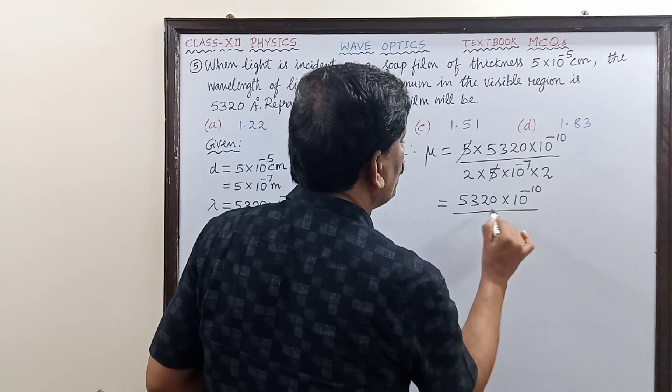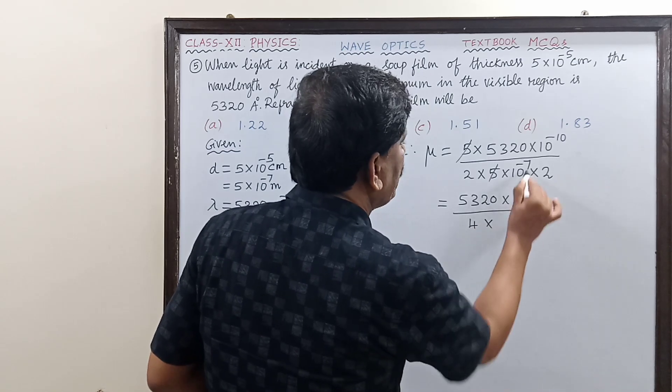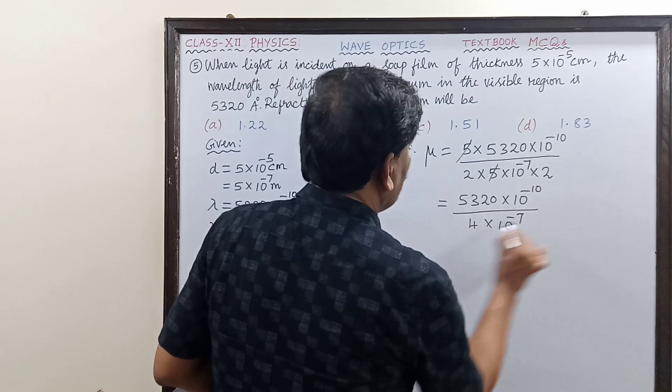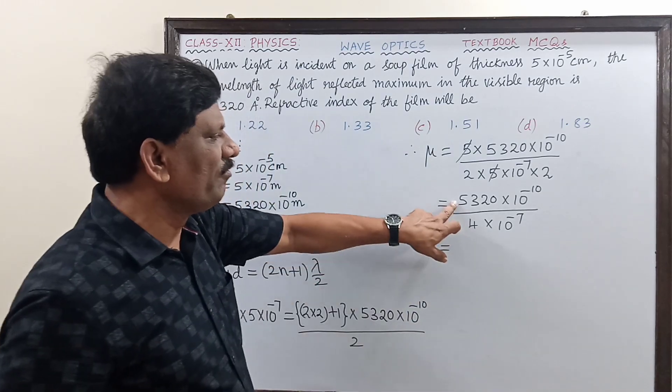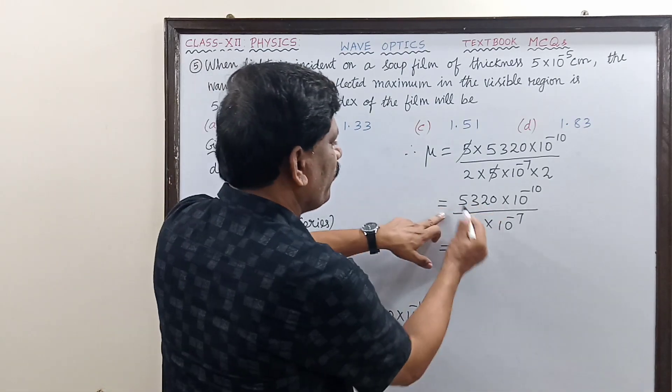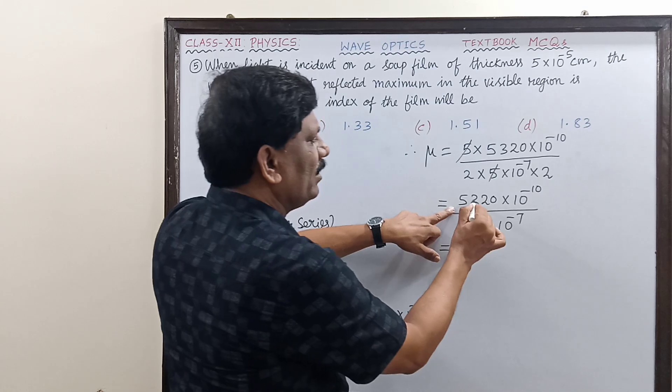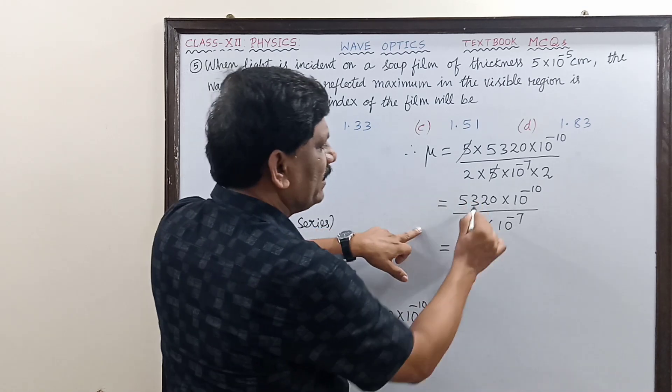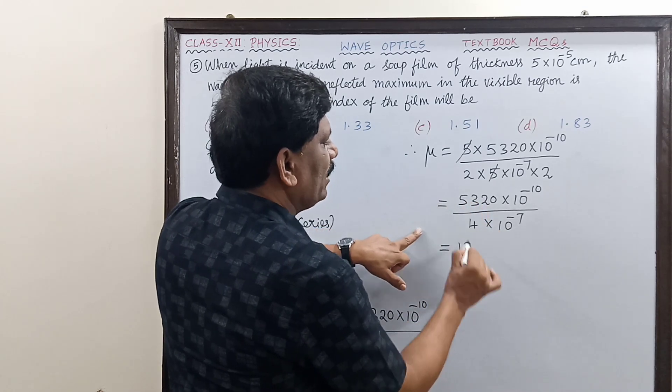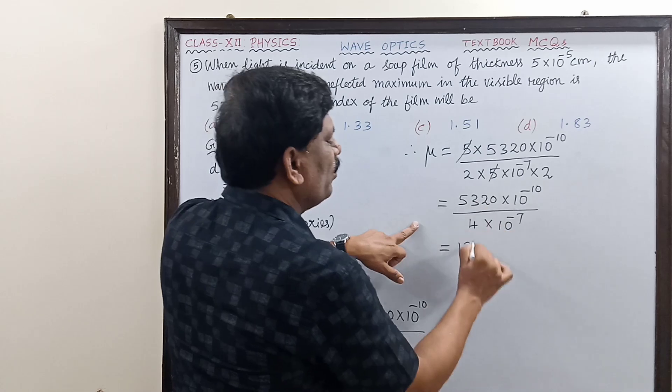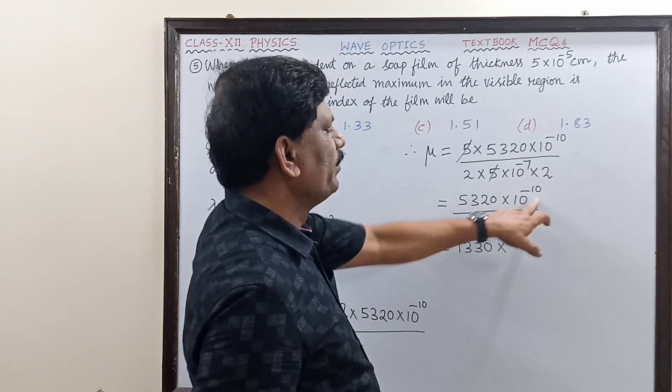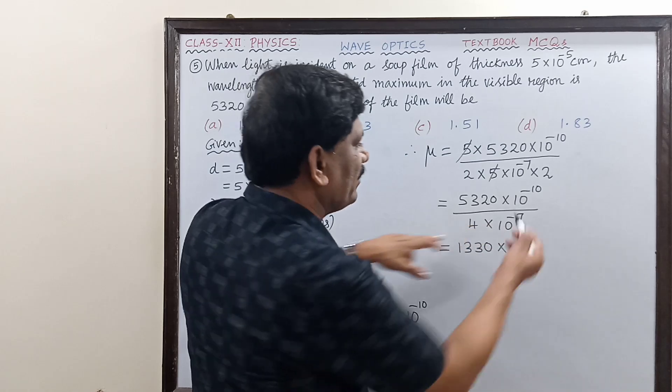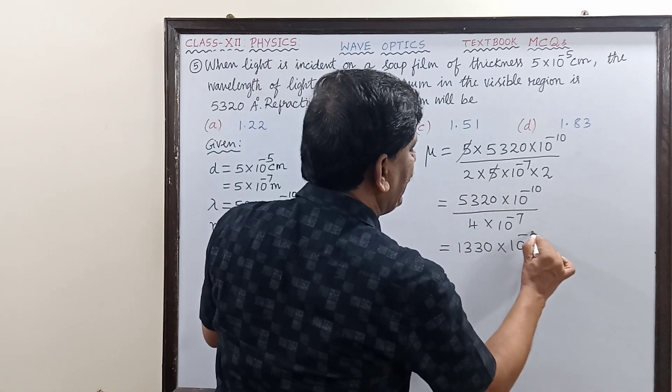This equals 5×5320×10⁻¹⁰ divided by 4×10⁻⁷. Now dividing 5320 by 4: four ones are four, thirteen divided by four gives three, resulting in 1330. Adjusting the powers gives 1330×10⁻³.